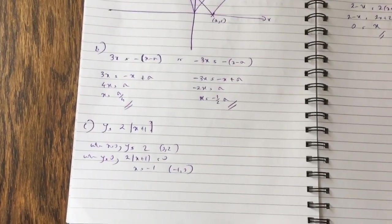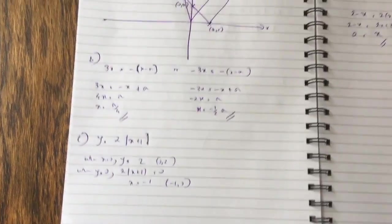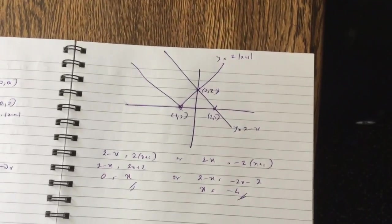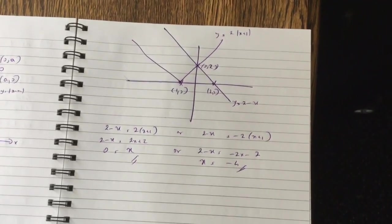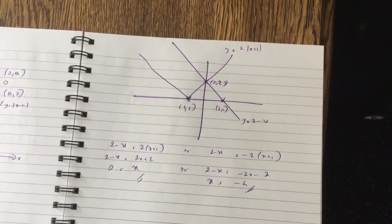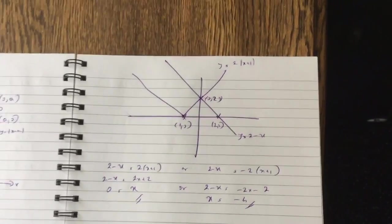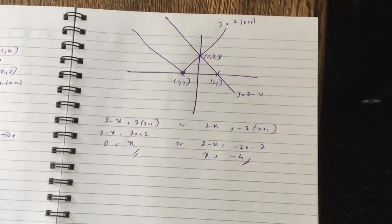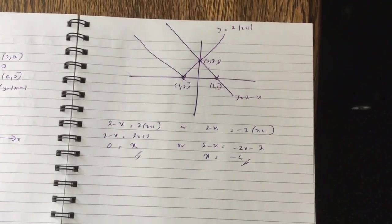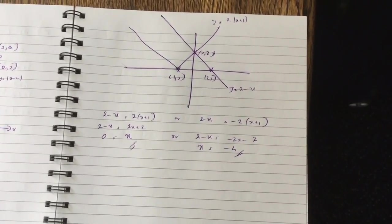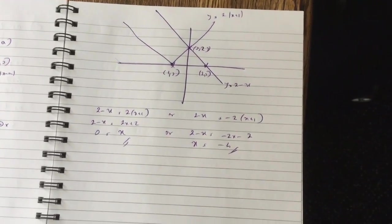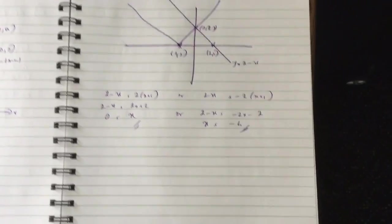Part c: y = 2|x + 1|. Use x = 0 and y = 0 to get key points and sketch it, along with y = 2 − x, a straight line going down. There's a potential intersection at x = 0 and possibly one on the left-hand side. Solving 2 − x = 2(x + 1) gives x = 0, and 2 − x = −2(x + 1) gives x = −4.